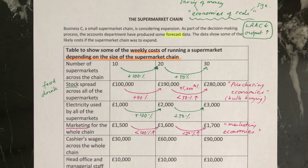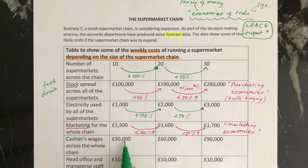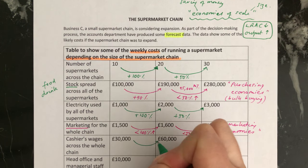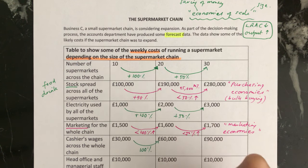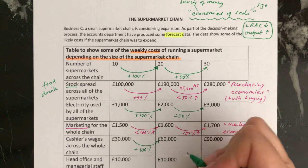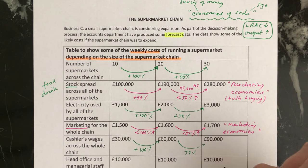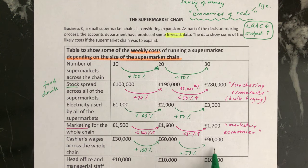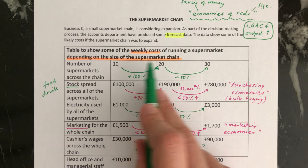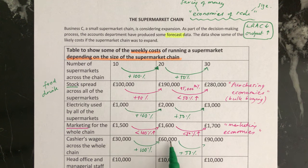Looking at cashiers' wages, this increases by exactly the same proportion as the number of shops. From 10 to 20 shops is a 100% increase in wages, and from 20 to 30 shops is a 50% increase. So here there are no economies of scale, because if you have double the amount of shops you have to pay double the amount of wages.